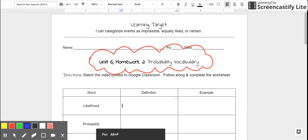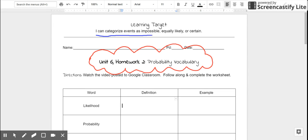Our learning target for this homework assignment is: I can categorize events as impossible, equally likely, or certain. As we work on this activity, please watch the video and follow along and complete the worksheet. Anything that you see written on your screen should also get written on your paper.